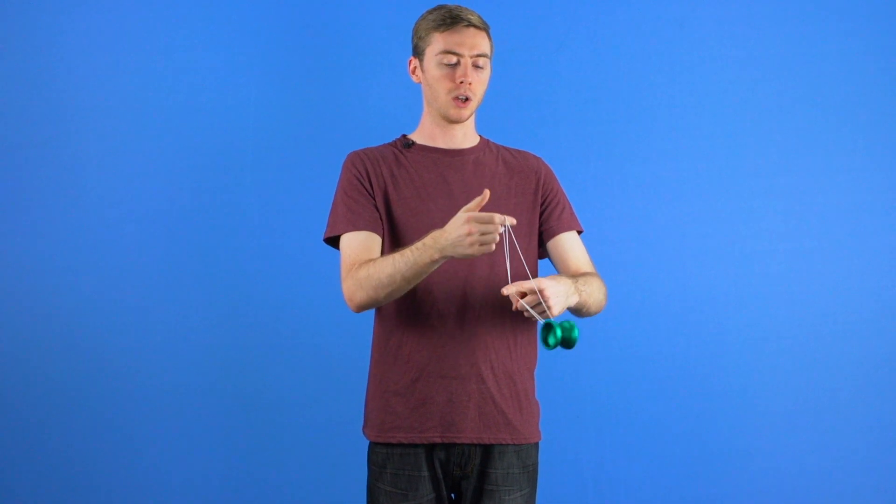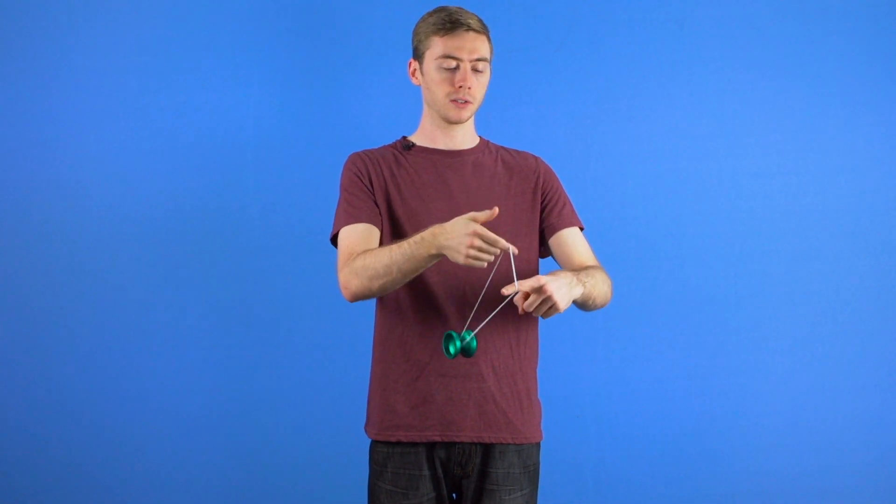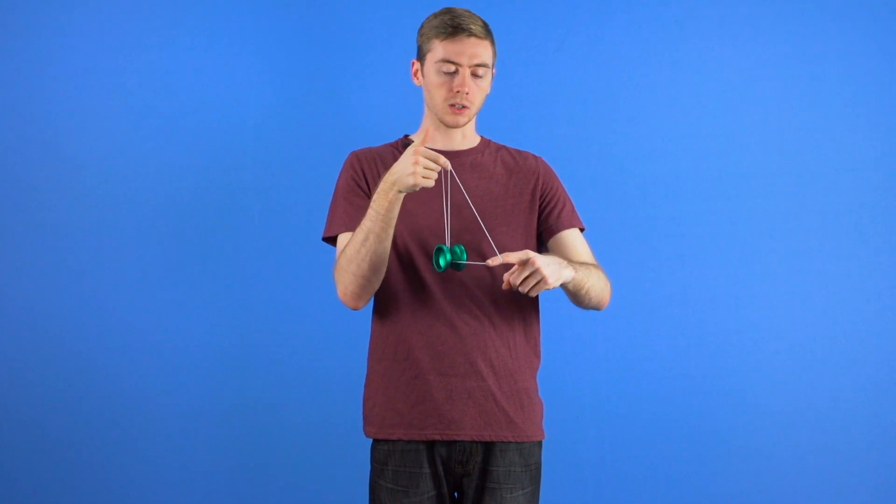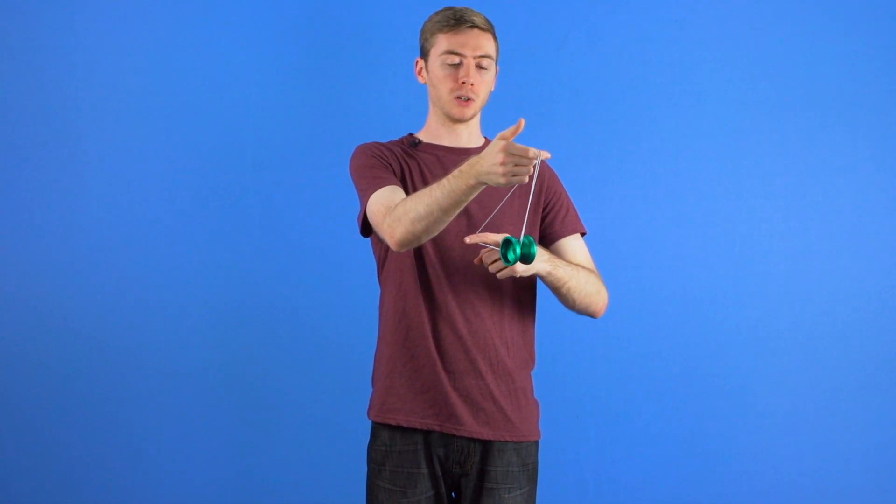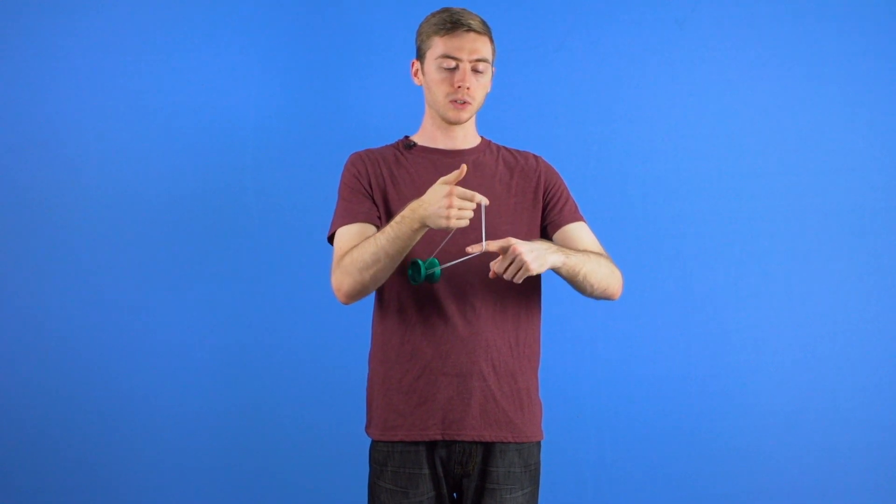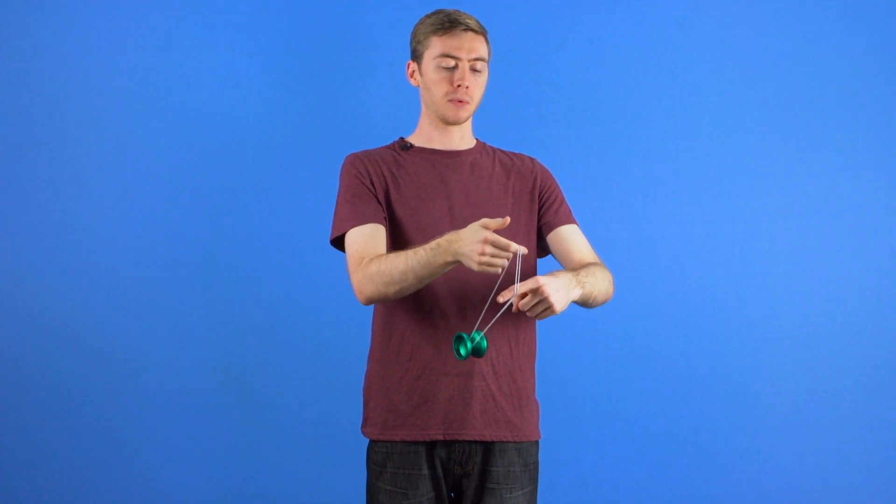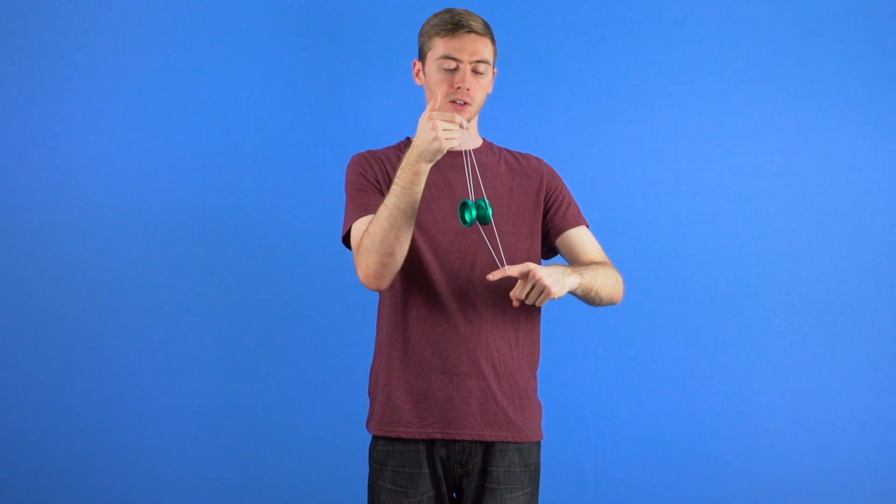As you can see, I'm using the momentum of the boingy boing to pass the yoyo above and under my index finger on my non-throw hand. To achieve this, when the yoyo's momentum is pushing away from you, you're going to drop the yoyo below your index finger and let it come back towards you, then use the momentum when it's coming back again to pull it above your finger and set it on the other side as it goes away again.